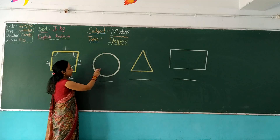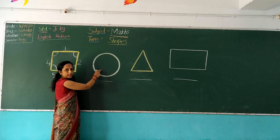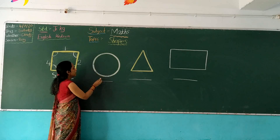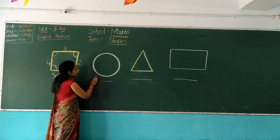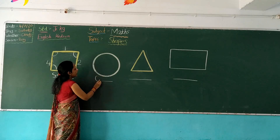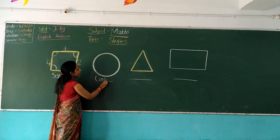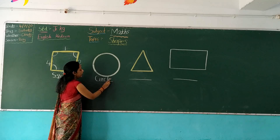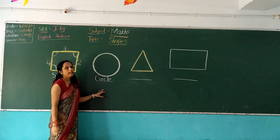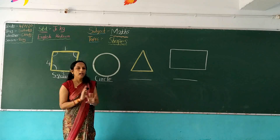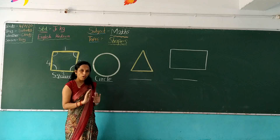Our second shape is circle. Which shape is this? This is a circle. C, I, R, C, L, E. Circle. It has no sides and no corners.